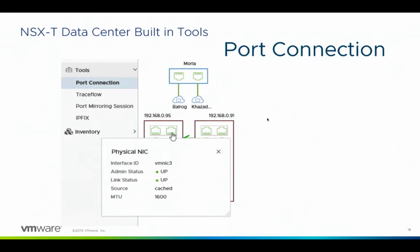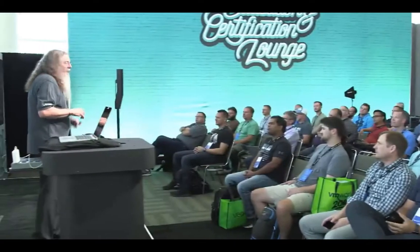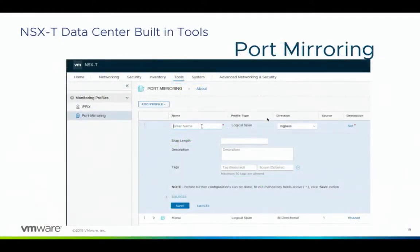How about the physical NICs? That one's up, the MTU size is right. NSX is encapsulating on the logical switch - we're not talking about all the inner workings of NSX in this session, but the MTU size is checked through the Port Connection tool as well as the firewall rules. We also check the tunnel: the TEP is the tunnel between hosts and we can see in both directions the tunnel is up. So what stopped traffic from Balrog to Khazad-Dum? The firewall.